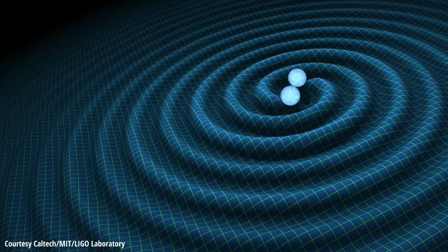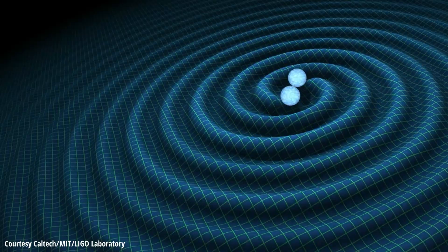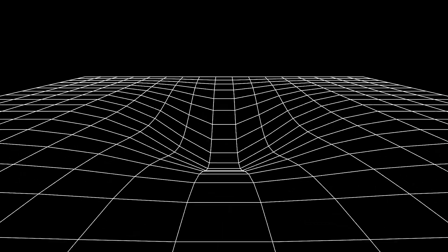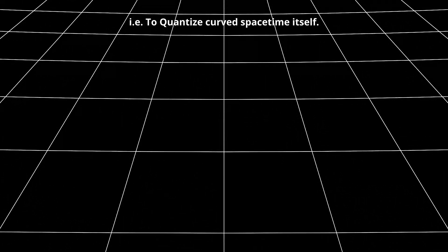Gravitational waves, for instance, are in general relativity kind of ripples in the spacetime fabric — like when you move your finger in water and waves appear. But in quantum mechanics, these gravitational waves would be composed of a large number of graviton particles, just like how the light we can see is nothing but a large number of photons. Naturally, attempts have been made to create a valid quantum theory of gravity, the most straightforward being to directly quantize the gravitational field of general relativity as we would have done to any other force.